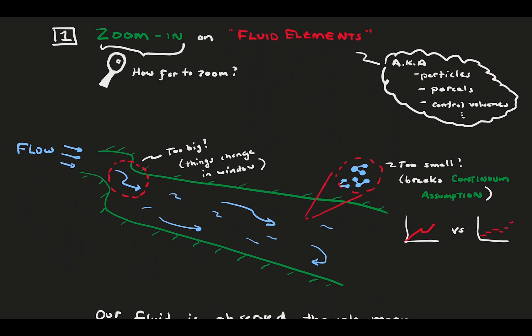Then, we defined our fluid element, which is just the particular blob of fluid we're interested in at a given time. This element isn't so big that we gloss over changes in the flow behavior, but not so small that we see molecules and break the continuum assumption.